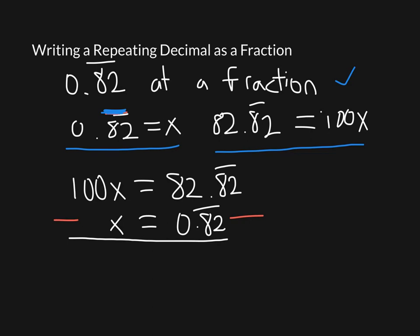So when I subtract 1x from 100x, I'm going to end up with 99x. When I subtract 0.82 with a vinculum from 82.82 with a vinculum, I'm going to be left with just 82. Then to solve this, I'm just going to divide both sides by 99. And I'm left with x is equal to 82 divided by 99. And that's my answer.